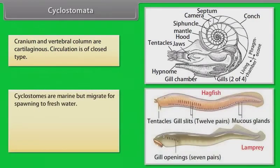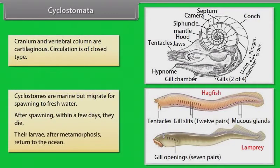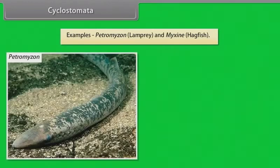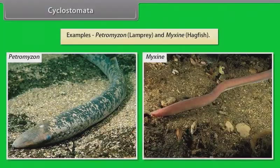Cyclostomes are marine but migrate for spawning to fresh water. After spawning, within a few days, they die. Their larvae, after metamorphosis, return to the ocean. Examples: Petromyzon (Lamprey) and Myxine (Hagfish).